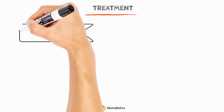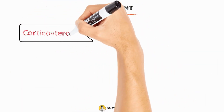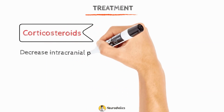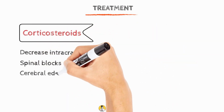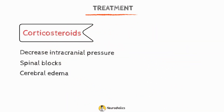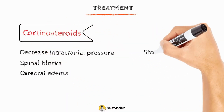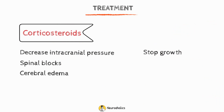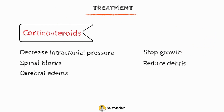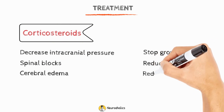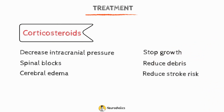Supplemental corticosteroids alleviate symptoms like increased intracranial pressure, spinal block, and cerebral edema caused by tuberculomas. They may also stop the paradoxical growth of the lesion that occurs three months into treatment, and they may reduce debris in the basilar meninges, which may reduce the risk of stroke.